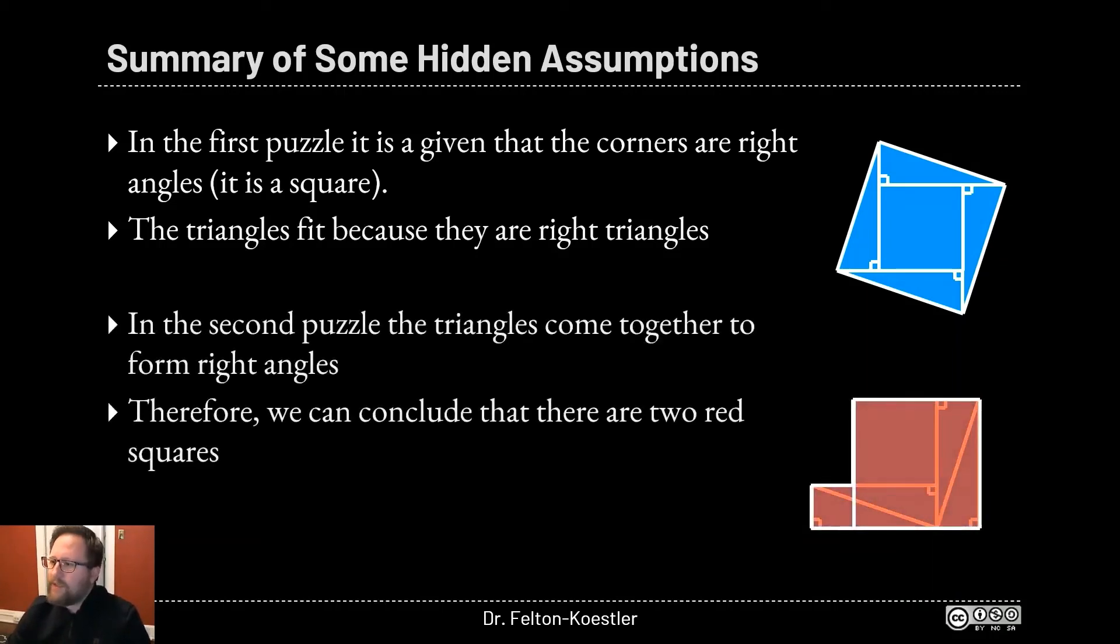The second puzzle is a little bit different. We don't know yet if they're squares and we figure out that they're squares because the two triangles come together and make a right angle. Therefore we can conclude these are squares and we're able to calculate the area the way we want it. I hope that helped clear up any questions you had about the Desmos activity.